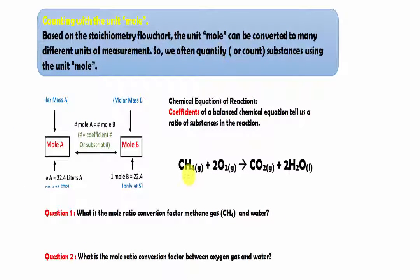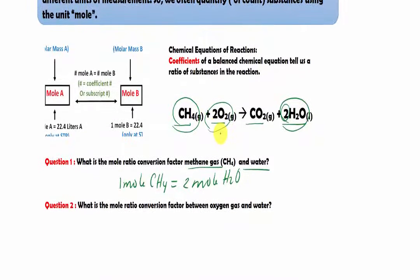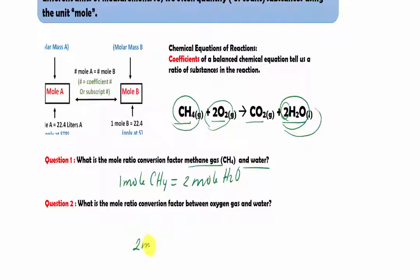Now a more complex problem: methane reacts with oxygen gas to produce carbon dioxide and water. We have one mole of methane reacting with two moles of oxygen to produce one mole of carbon dioxide and two moles of water. What is the mole ratio between methane and water? One mole of methane to two moles of H₂O. What is the mole ratio between oxygen and water? Two moles of oxygen to two moles of water, which simplifies to one to one — both answers are correct.